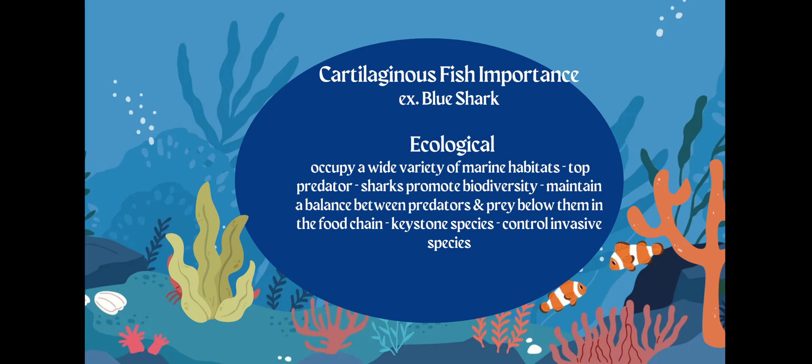Our example will be a blue shark. Environmentally, when we're talking about ecology, they occupy a very large variety of marine habitats and are usually top-level predators. Sharks actually promote biodiversity — the amount of different living organisms in the entire environment. They maintain a balance between predator and prey. Yes, they are a keystone species and they control invasive species. Sharks will actually go after slow, dying organisms that don't promote a healthy environment and get rid of them for us.